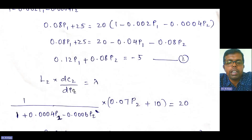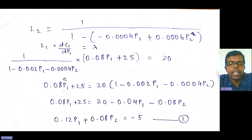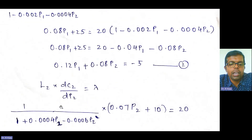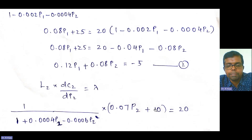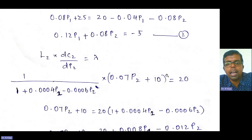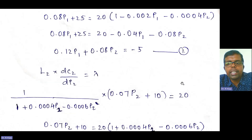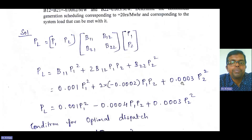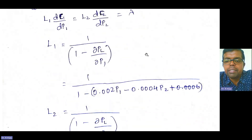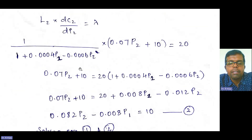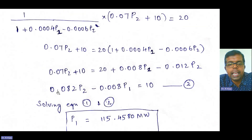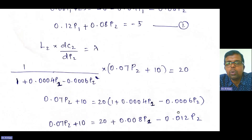Similarly, applying L2 × dC2/dP2 = lambda: differentiating C2 with respect to P2 gives dC2/dP2 = 0.07 P2 + 10. Substituting lambda = 20 and simplifying, we get Equation 2: 0.008 P2 minus 0.0008 P1 = 10.